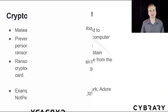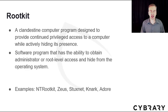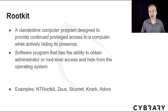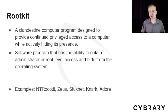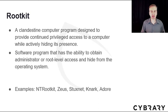Malware often tries to hide its tracks from antivirus software, and a rootkit does exactly that. It's a clandestine computer program designed to provide continued privileged access to a computer while hiding its presence. It also has the ability to obtain administrator or root-level access and hide from the operating system. Examples include NT rootkit, Zeus, Stuxnet, NARC, and Adore.